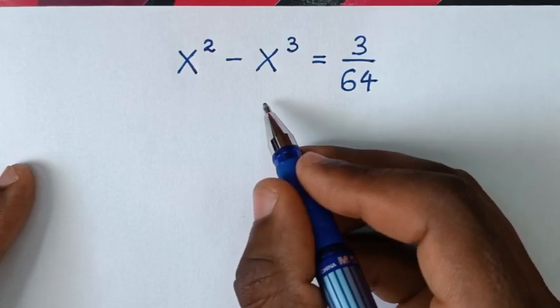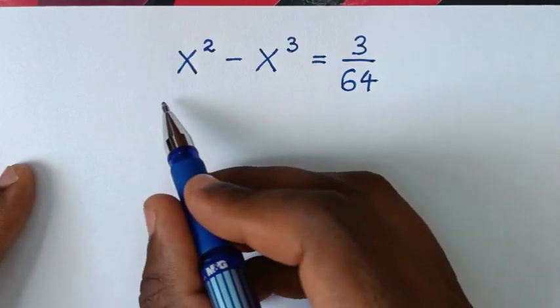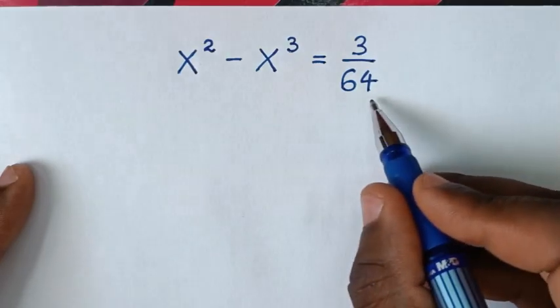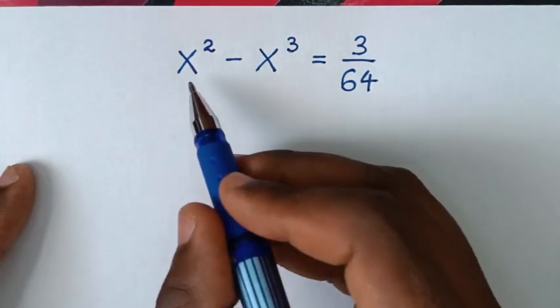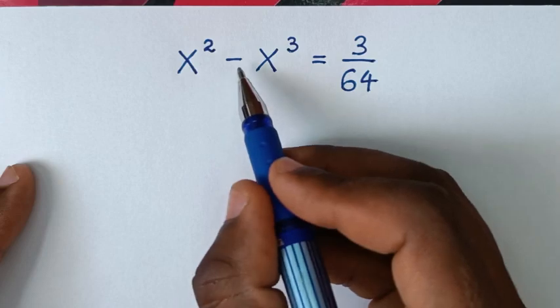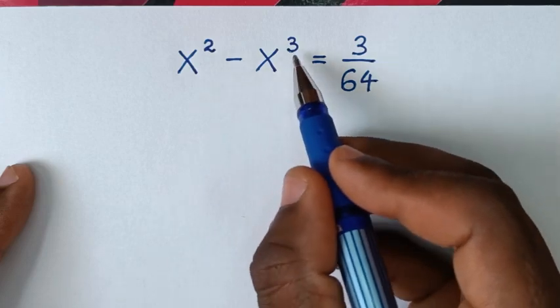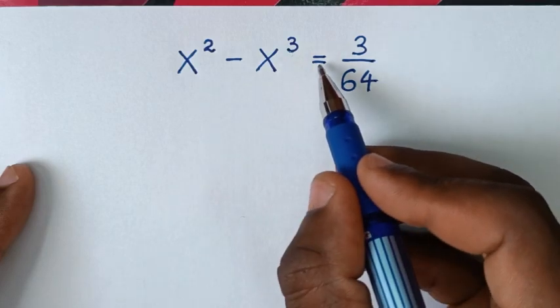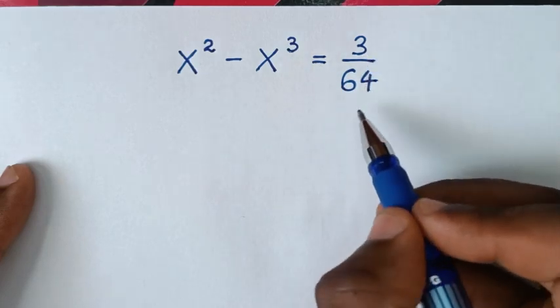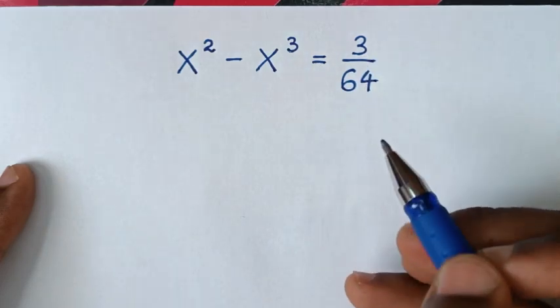Hello, you are welcome to solve this math problem, which is x squared minus x cubed is equal to 3 over 64.